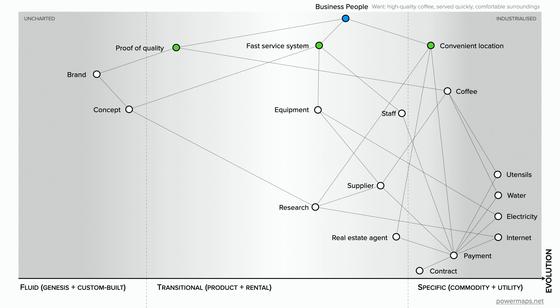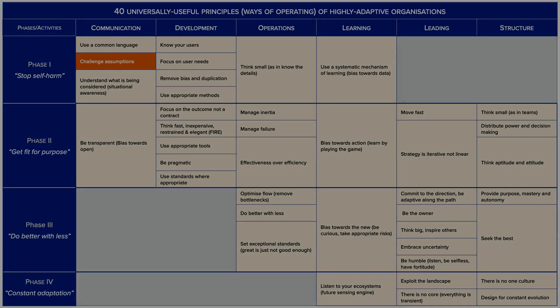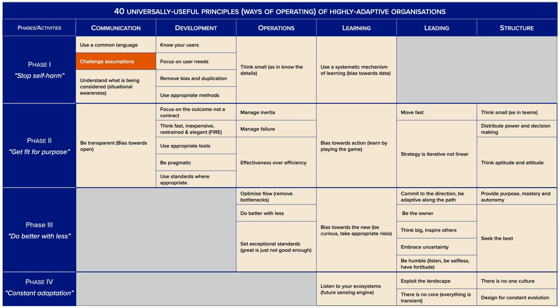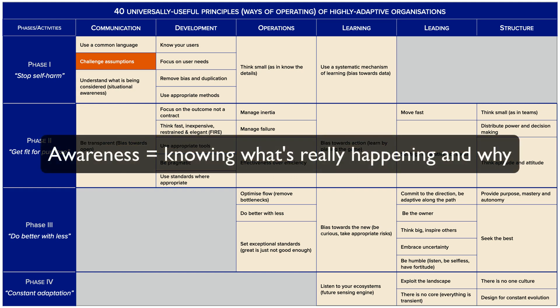Once you have maps showing how you and your industry create value for users, you can share these with others so they can challenge them. This will allow you to start tapping into the collective intelligence of your organization and wider networks more effectively. And the more eyeballs you have on the situation, the more awareness you're going to develop about what's really happening and why.